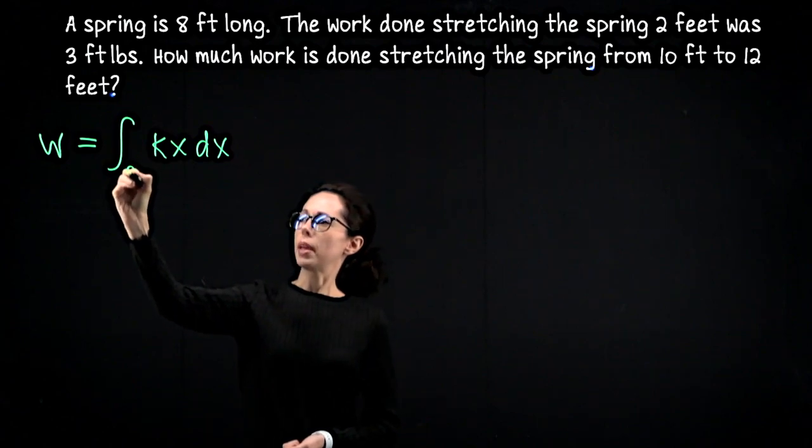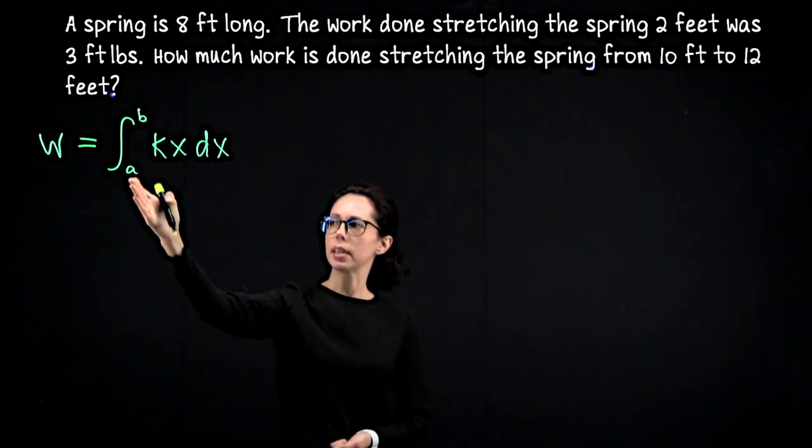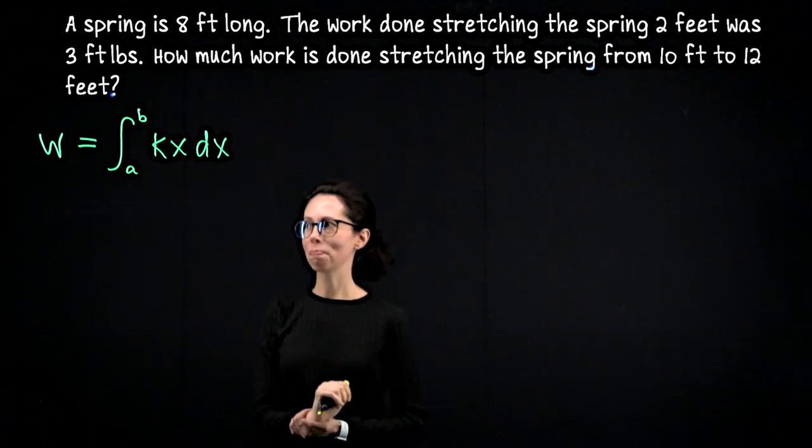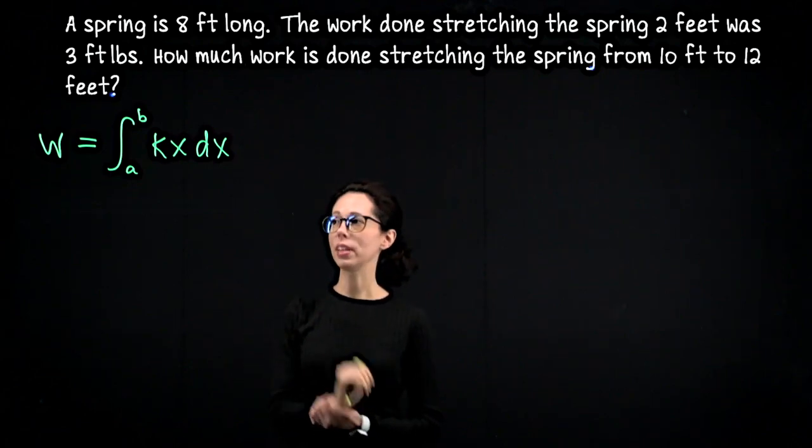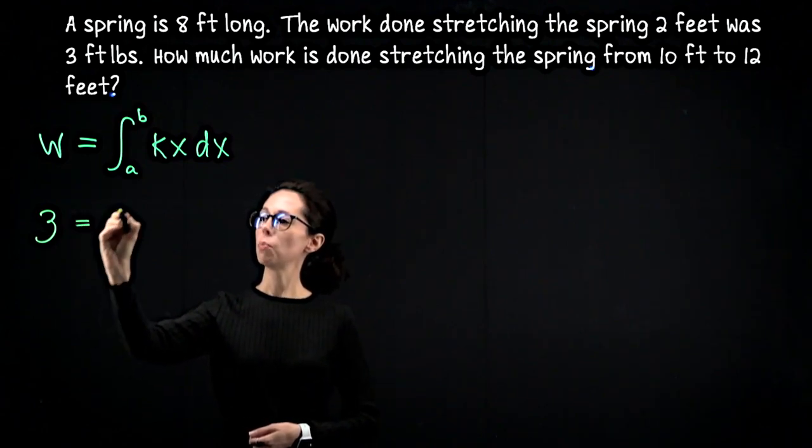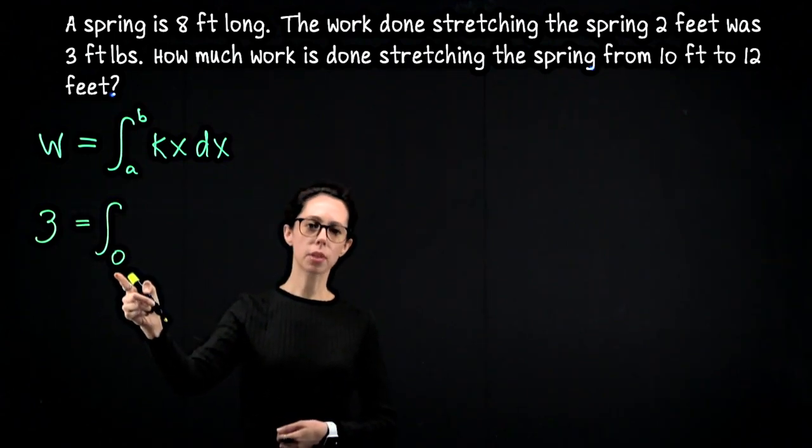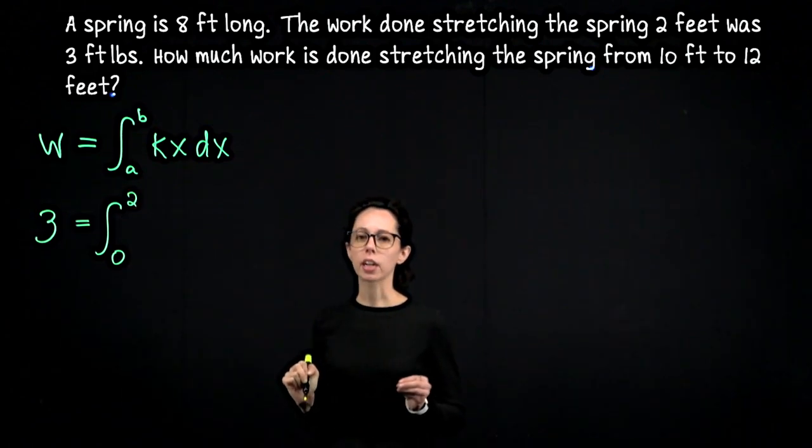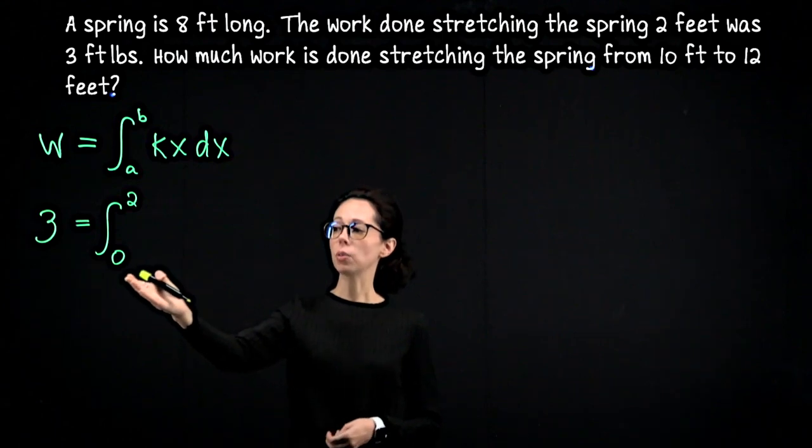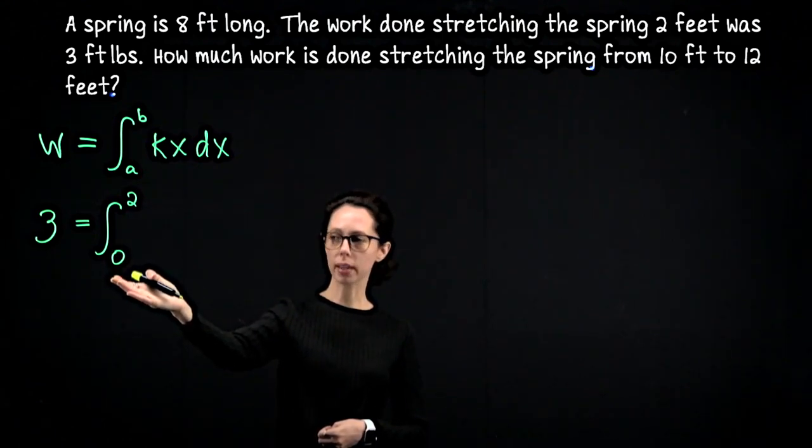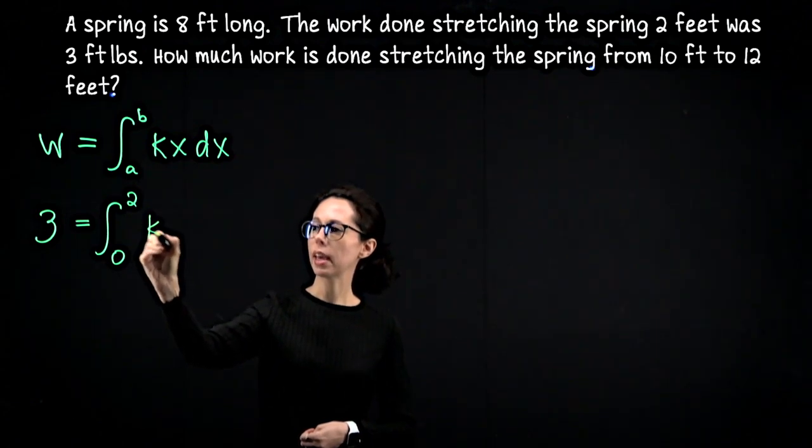I'll just drop in a and b, representing a feet in relation to equilibrium to b feet. Let's translate the information we have into this equation. We are told that we need three foot-pounds to move the spring from equilibrium, so that's the lower bound of zero, out two feet. Notice here, going from eight feet to ten feet in bounds is from zero to two, because eight feet is the resting length of the spring. And then we will integrate kx dx.